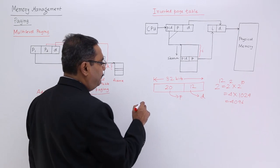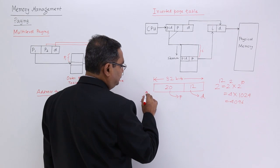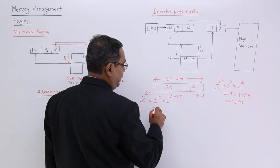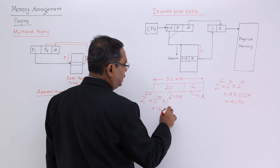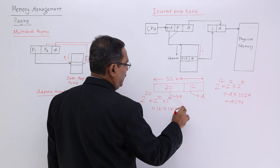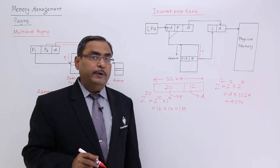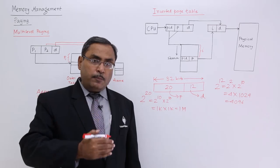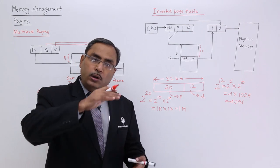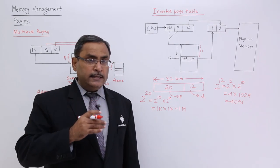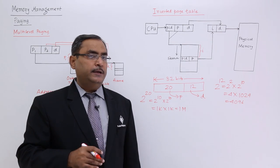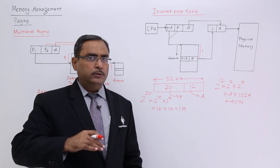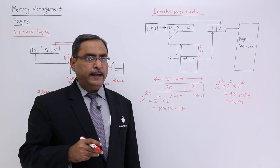A 20-bit page number means 2 to the power of 20 combinations are possible, which is 1 kilo into 1 kilo, that is 1 mega. So 1 mega number of combinations are possible, meaning I require 1 mega number of locations to hold the page map table. Getting such consecutive free memory space might be a problem, and dealing with such a huge memory block may also be time-consuming.